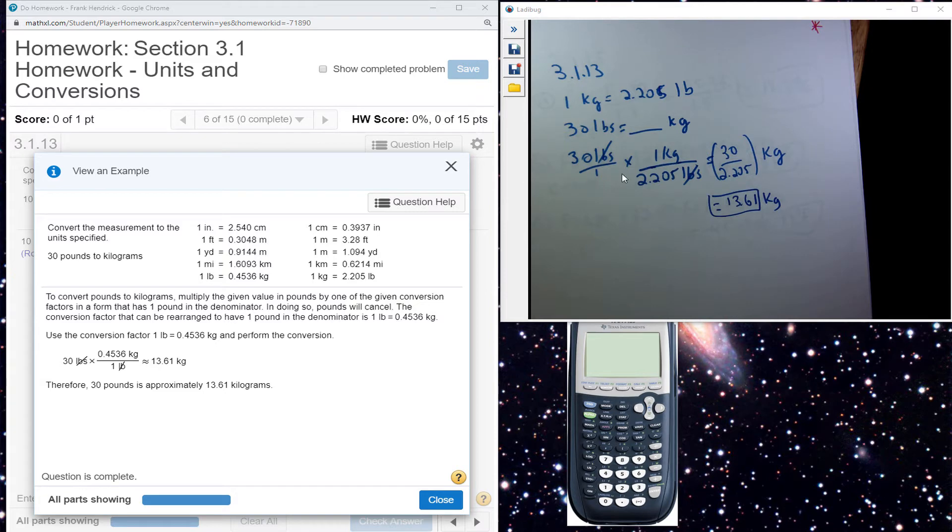So the way we set this up is, 1 kilogram is equal to 2.205 pounds. When I multiply here, I want pounds to cancel out, so I'll put that in the bottom, so it'll cancel out. And I want to convert it to kilograms, so put that up top, so that's left.